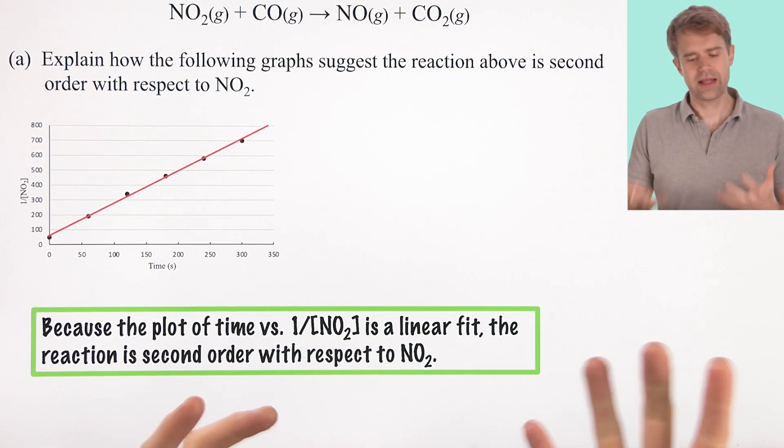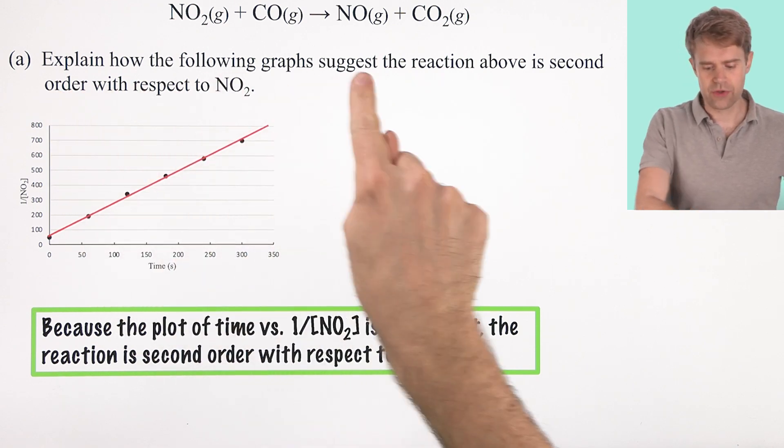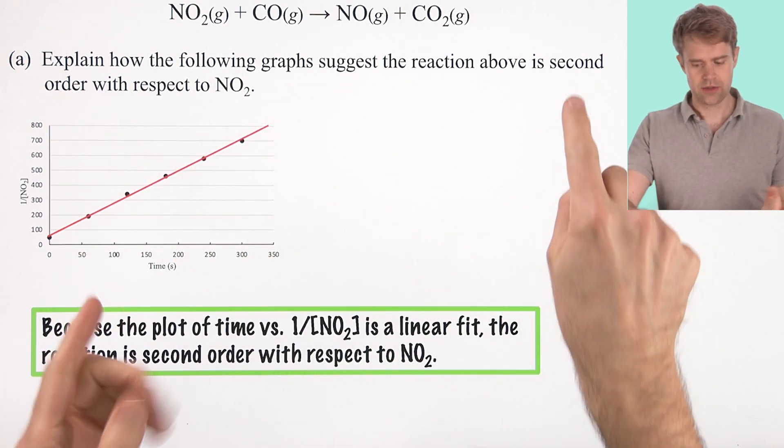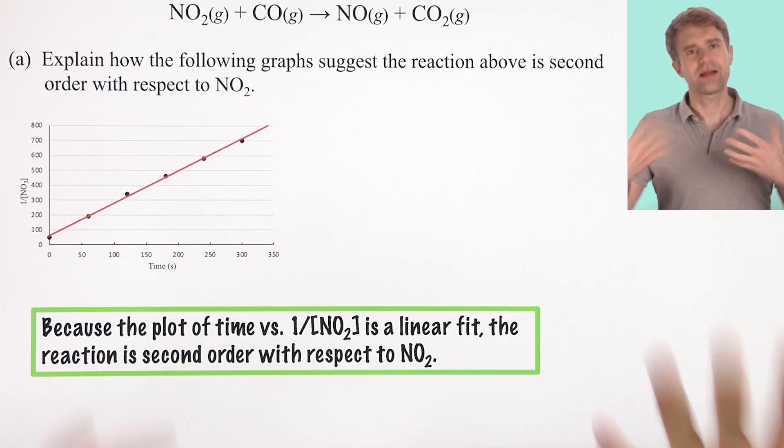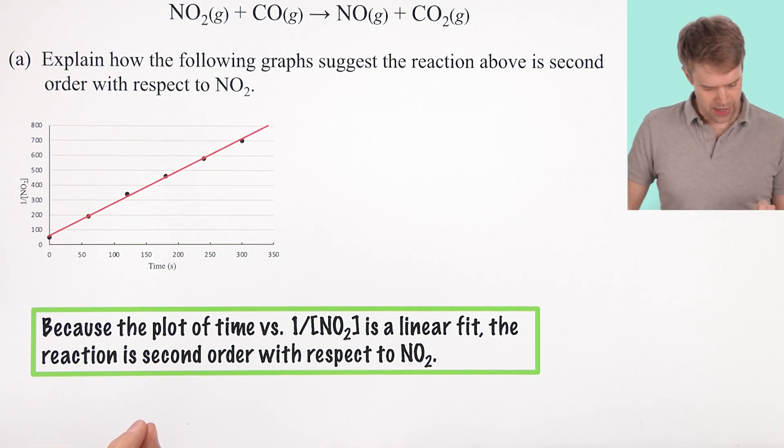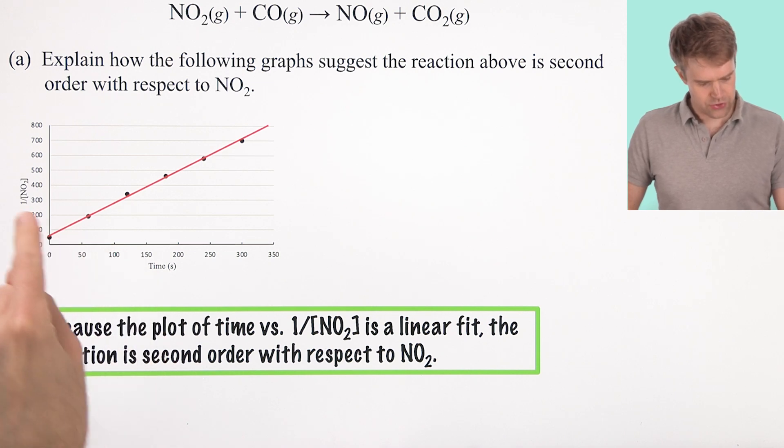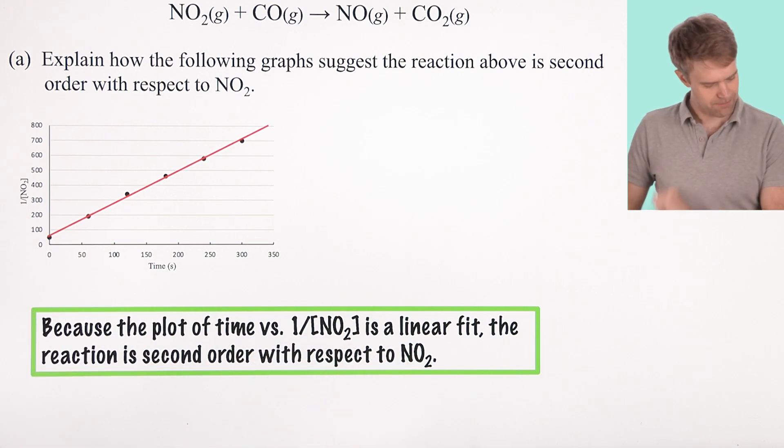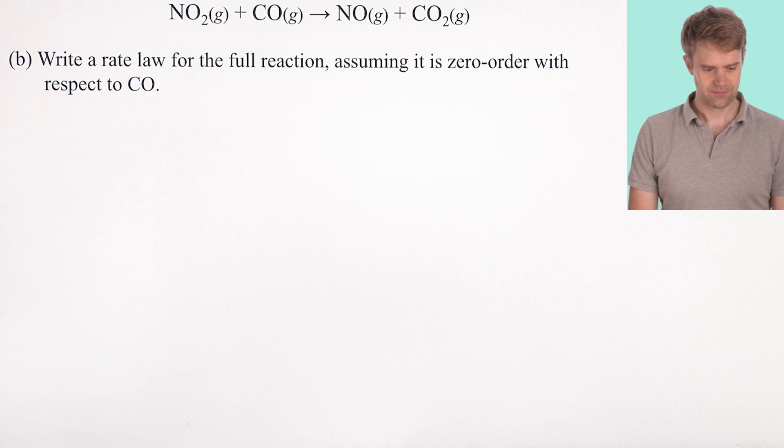This tells us that the reaction is second order. Now to correctly answer the question, because we're explaining how the graphs suggest that the reaction is second order, we want to write something like this: Because the plot of time versus 1 over NO2 is a linear fit, the reaction is second order with respect to NO2.